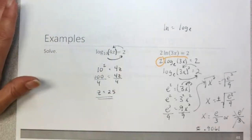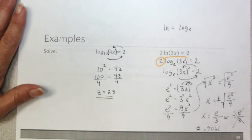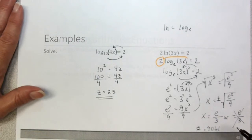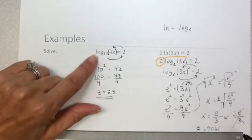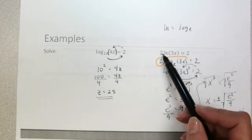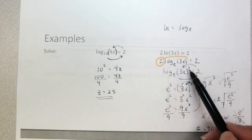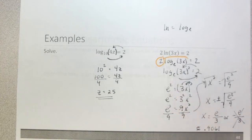So converting to exponential form is the easiest way to solve a logarithmic equation when there's only one log expression in the equation. However, always keep in mind that if the logarithm has a coefficient in front of it, you need to bring it up and make it an exponent first using the power rule.